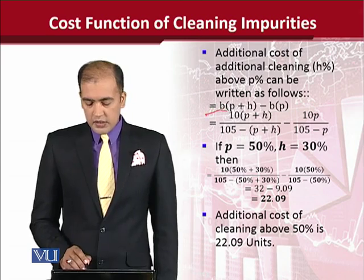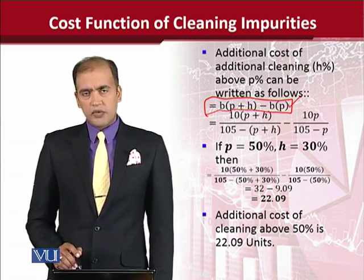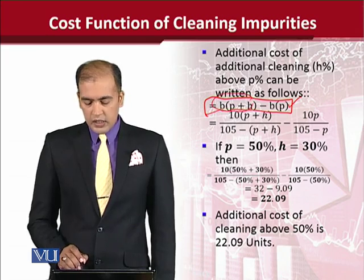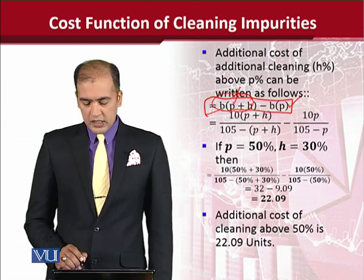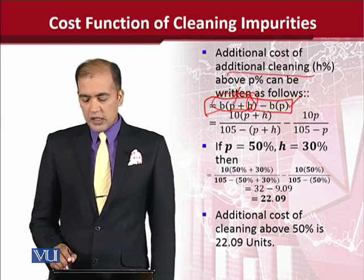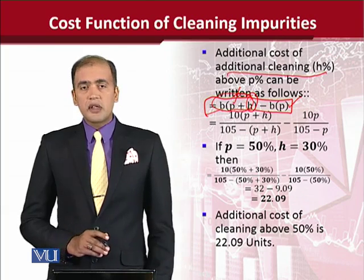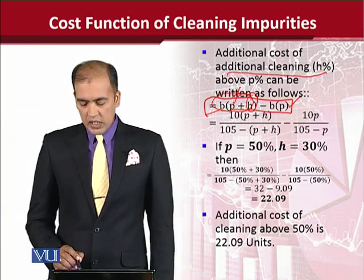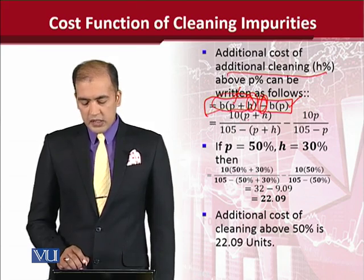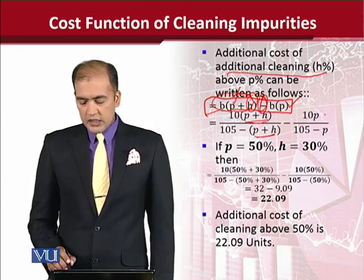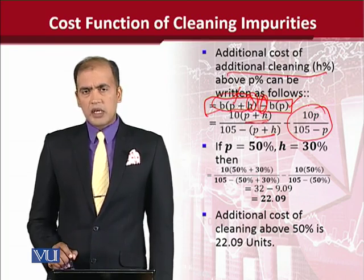We are going to model our situation so that there is a certain level of cleaning — for example 50% — and the new cost of cleaning will be the sum of that initial level plus an additional cleaning represented by H%. To find the additional cost, that is the difference between the new and the previous cost of cleaning, we use a negative sign. In place of P, I am putting P plus H wherever P appeared, and this is subtracted from the older version without any additional cleaning.